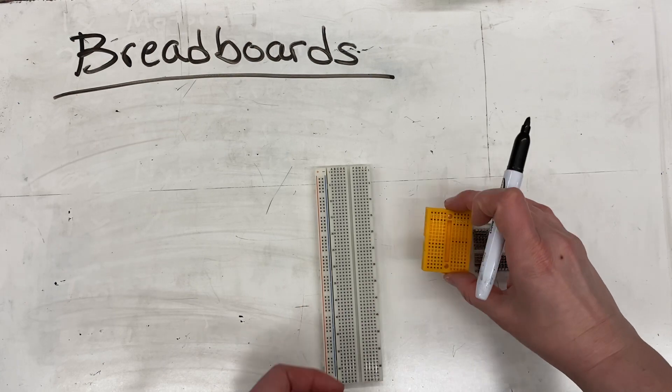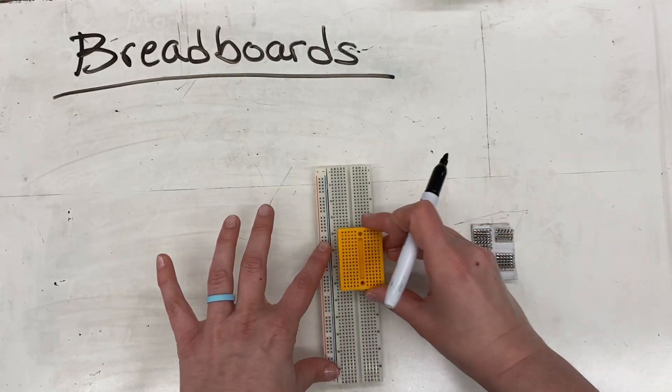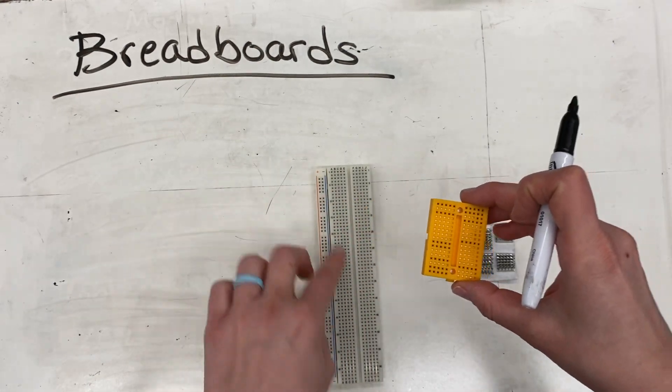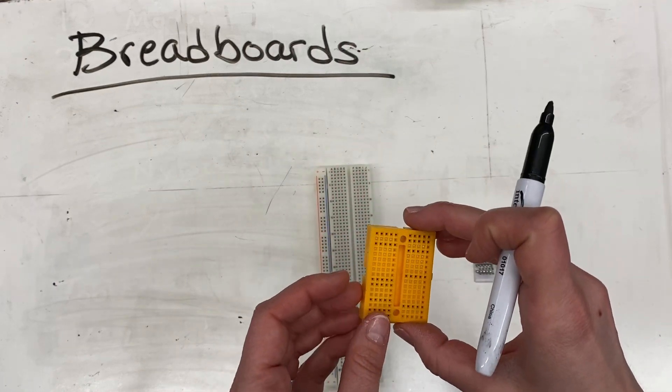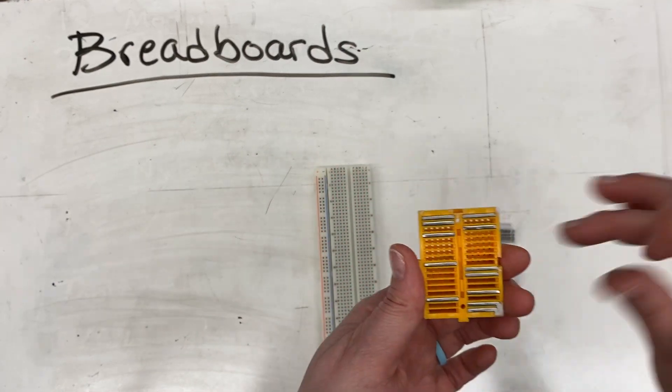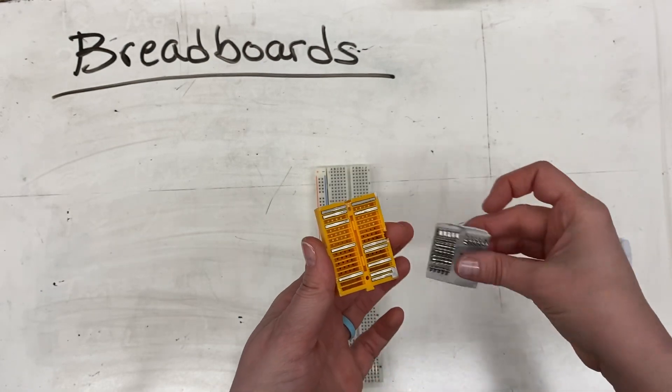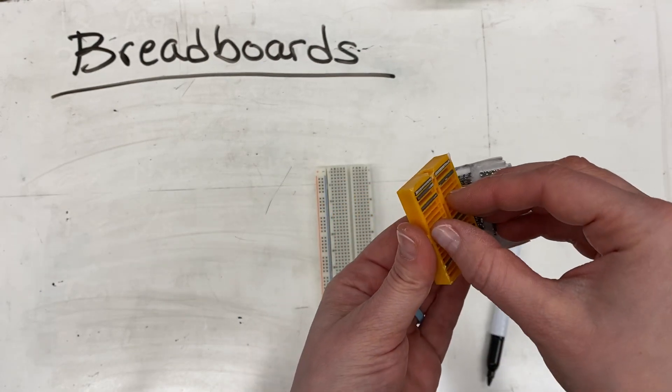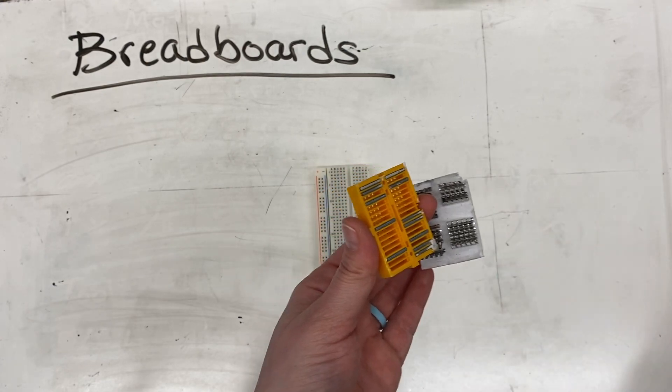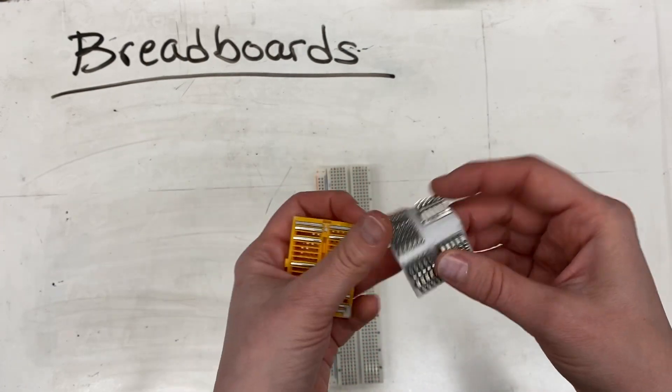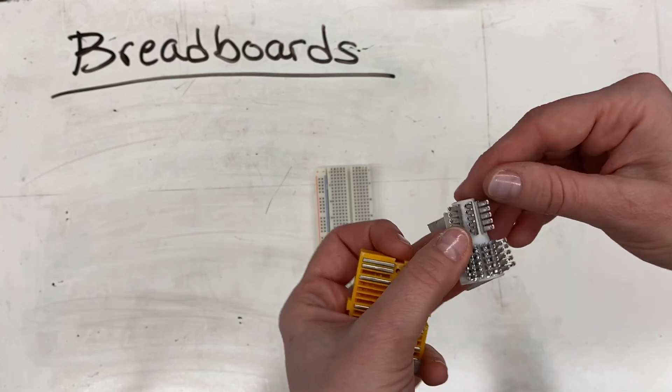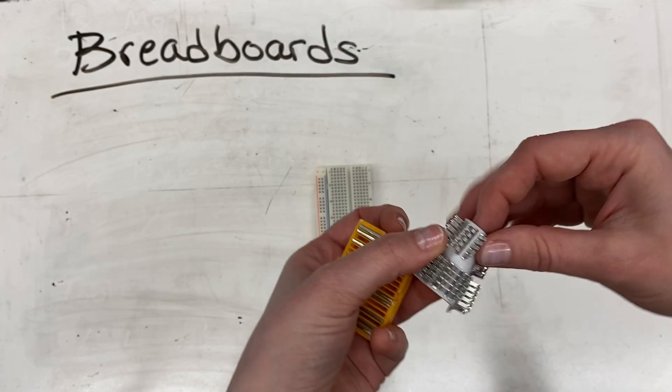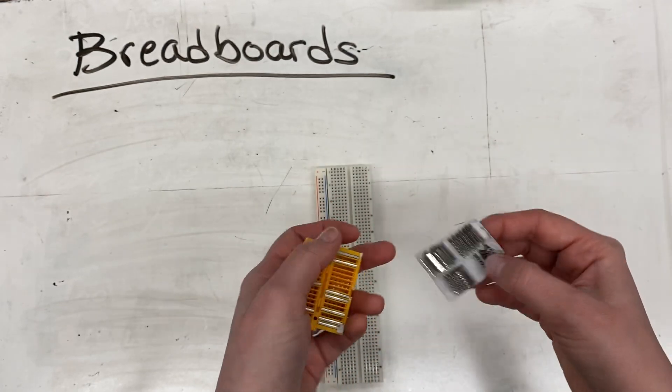How the breadboard works is it's basically this and this are the same thing. There's this extra little panel on this one, and I'll talk about that in a second. But what's on the inside of a breadboard is this—each of these little metal pieces is actually a group, so there's five spots that are all connected.